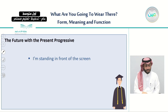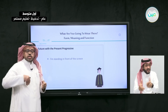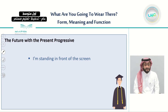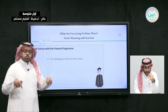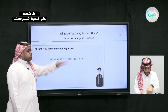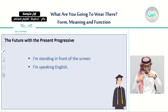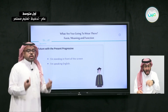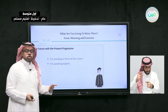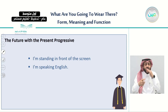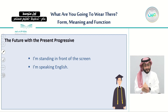We have learned that we use the present progressive for actions happening right now. For example, right now I am standing in front of the screen. Right now I am speaking English. So if we use the verb with the -ing form, it means we are talking about actions happening right now. This is true, but the present progressive also has other uses.